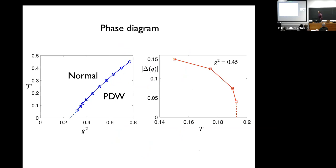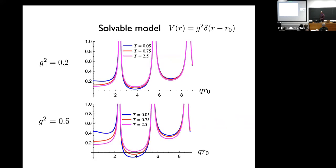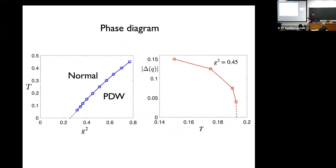We find the phase boundary between the normal state and the pair density wave state at different temperatures, where the temperature dependence comes from the pair susceptibility. The dashed line corresponds to regimes where we cannot compute because at low temperatures the numerical solution of the self-consistent equations requires keeping many Matsubara frequencies.